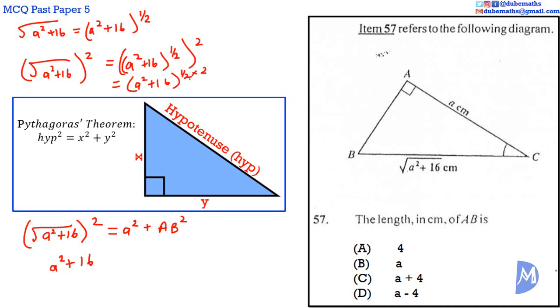And a half multiplied by 2, the twos would cancel to remain with 1. A squared plus 16 to the power of 1 is equal to A squared plus 16.